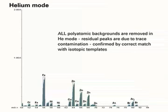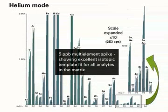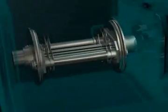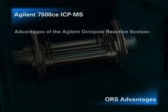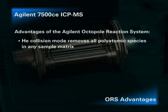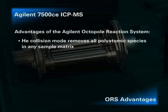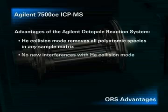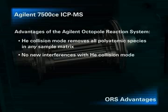Helium mode has removed all polyatomic interferences simultaneously. Adding a 5 parts per billion multi-element spike confirms all analytes are easily measured in this very complex sample matrix. The octopole reaction system offers the analyst a number of advantages. Its unique helium collision mode removes all polyatomic species simultaneously, and no prior knowledge of the sample matrix is required. Unlike reactive cell gases, pure helium cell gas is inert and does not react with the analyte or sample matrix. Reactive gases are not suitable for multi-element analysis in complex sample matrices, since they react with the sample matrix forming new interferences in the cell, which can bias analytical data.